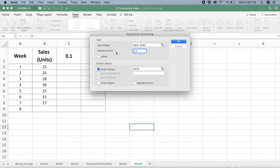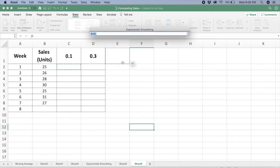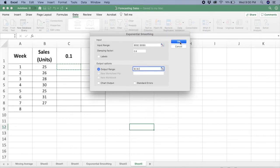It will be 1 minus 0.1, therefore it will be 0.9. And where do we want our output range to be? It will be exactly over here, just beside the first week value. And then we click OK.